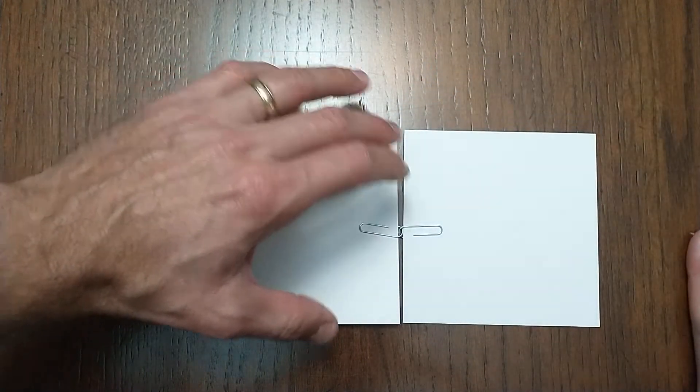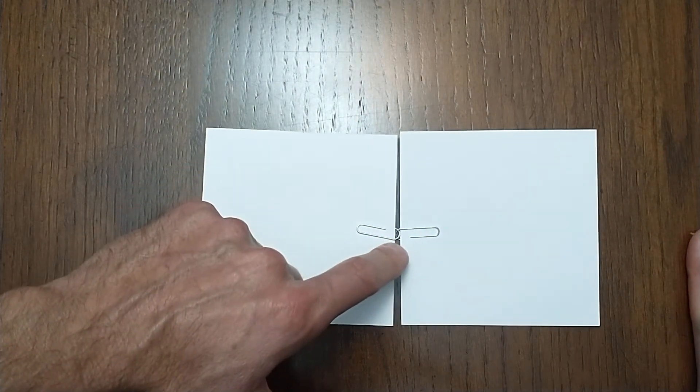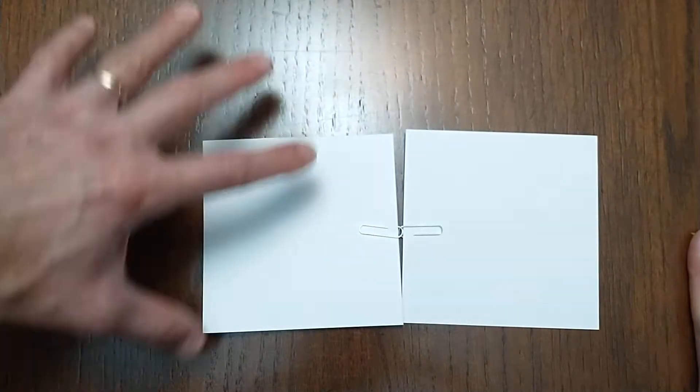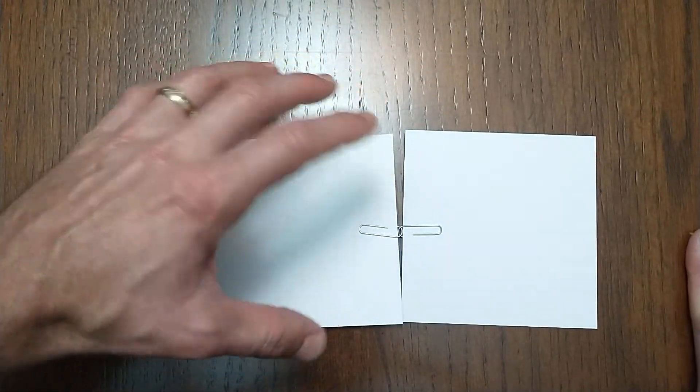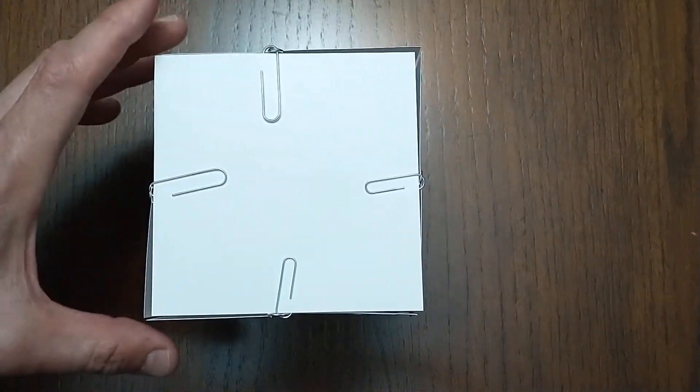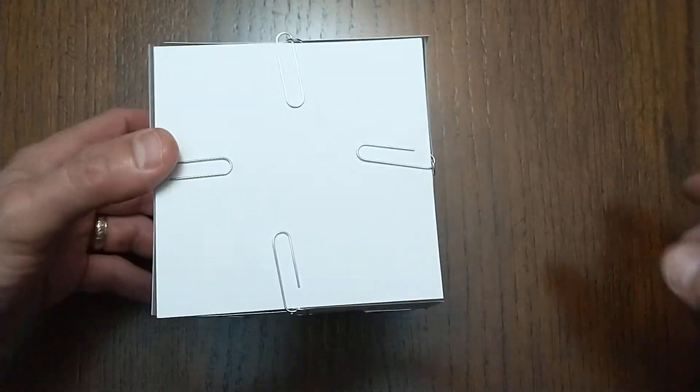So then the idea would be, then, have the kids make these hinges with the paperclips. Give them six squares and figure out how do you want to start out with the six squares arranged so that when you fold it up, it makes that net of a cube. And so here's a cube all put together with those paperclip hinges, if you will.